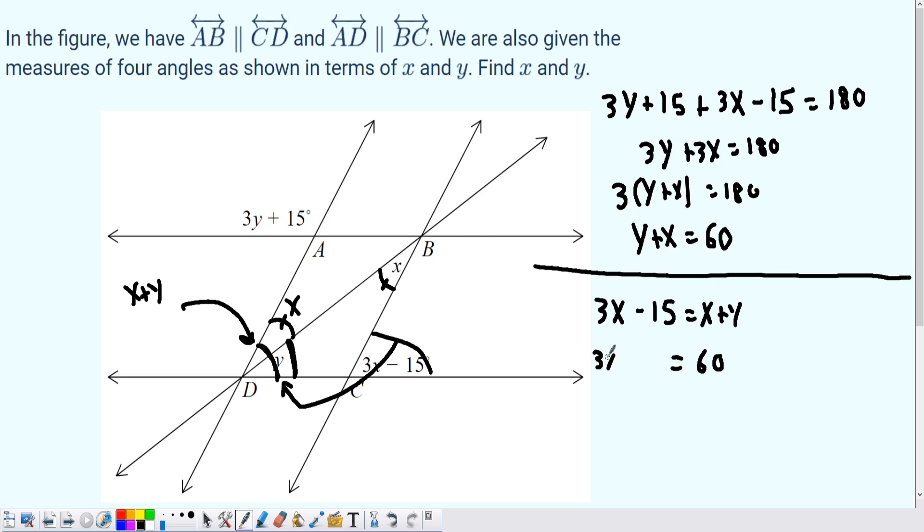We get 3x-15 equals 60. Simply add the 15 over to get 75, and then it's just a simple calculation of 75 divided by 3, which would get us x is equivalent to 25.